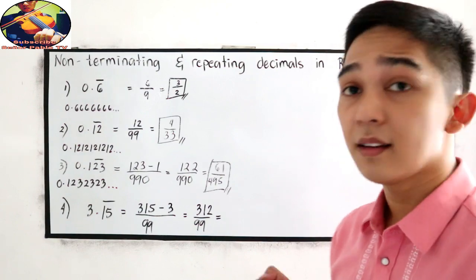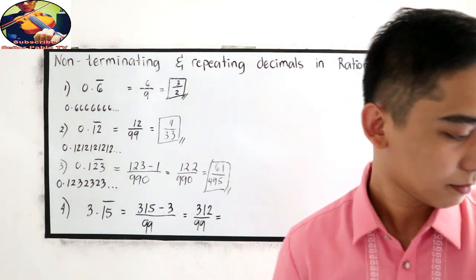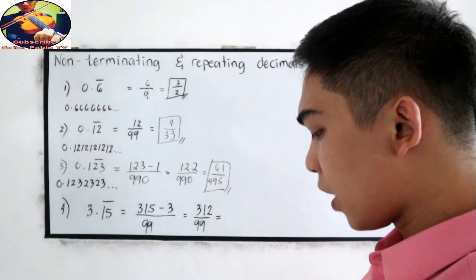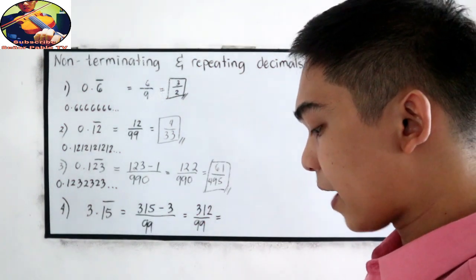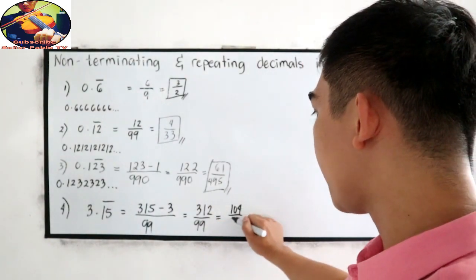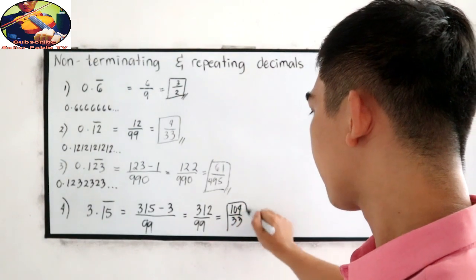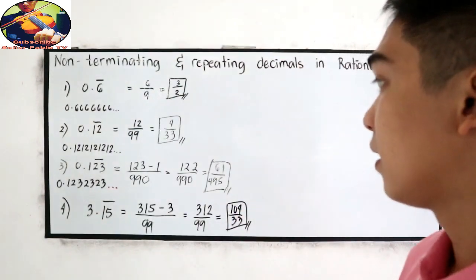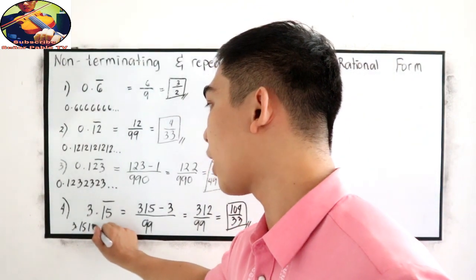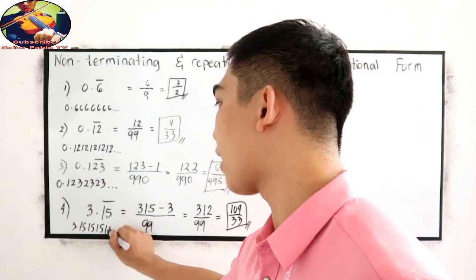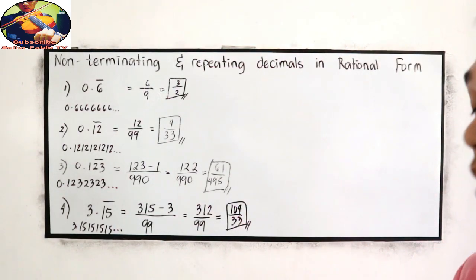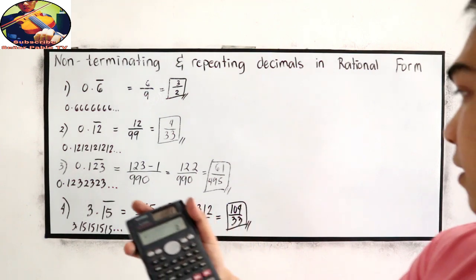312 over 99 is divisible by 3: 312 divided by 3 is 104, and 99 divided by 3 is 33. So we have 104 over 33. We know that 3.15 bar means 3.151515 and so on. Let us check: 104 divided by 33 equals 3.15151515 and so on. That is correct.